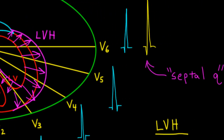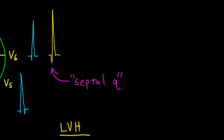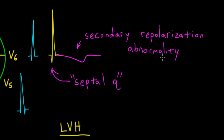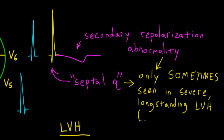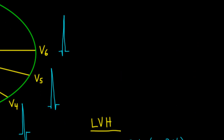In patients with long-standing hypertrophy, you can sometimes notice characteristic changes in the ST segment and T wave, where the ST segment becomes more depressed and the T wave becomes more inverted. This is called a secondary repolarization abnormality, and is only sometimes seen in severe long-standing hypertrophy. A more important cause of ST depressions and T wave inversions is cardiac ischemia, so if you see these changes, the first question should be: is this something serious like an MI?